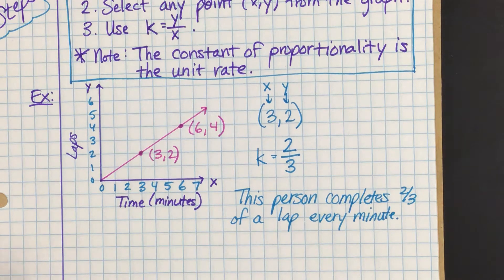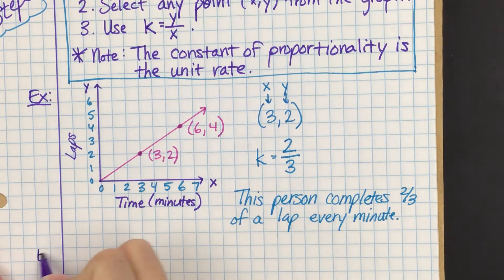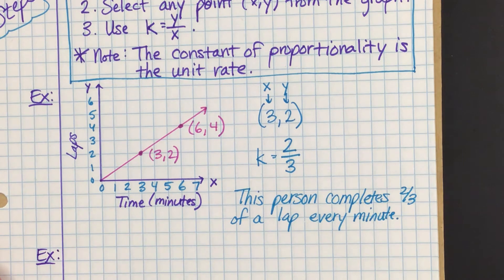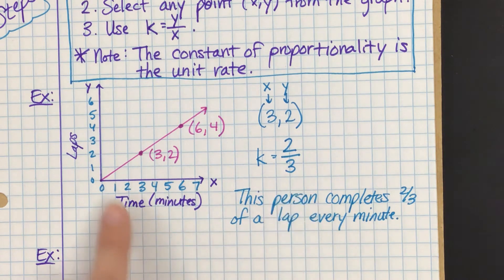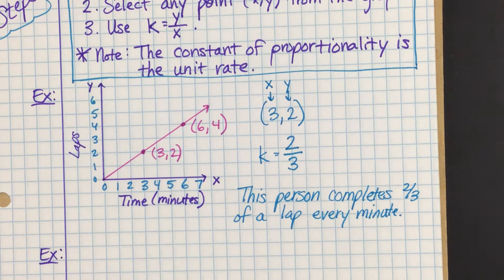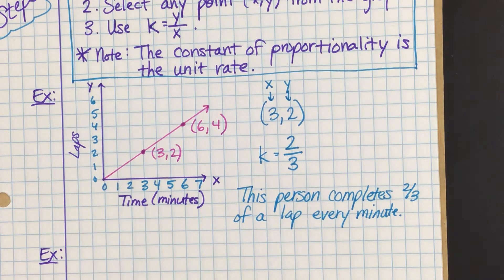Let me point something out before we move on. The constant of proportionality is the unit rate. So if you go to x = 1 on this graph and go up, you see it doesn't cross exactly at the crosshairs because it's a fraction — it's 2/3. Sometimes it's hard to know for sure what that is, so we use any point and divide y by x. Now that we know the constant of proportionality is 2/3, we can look at the graph and confirm it looks like it's crossing right at 2/3.